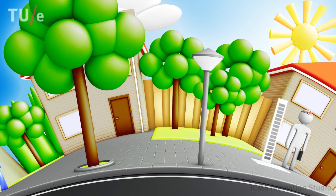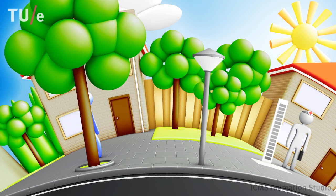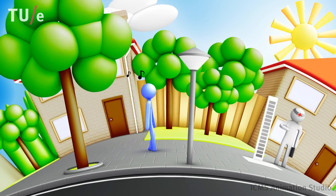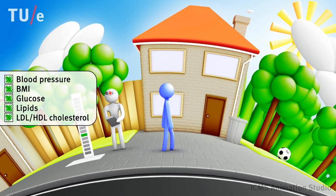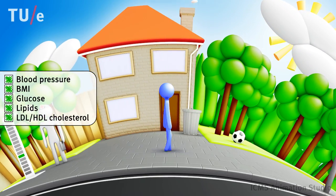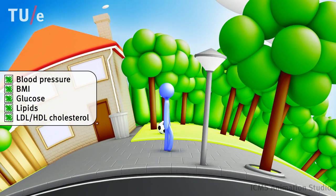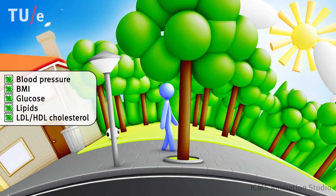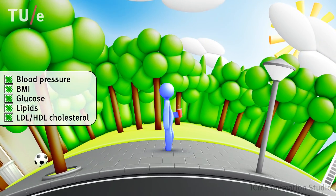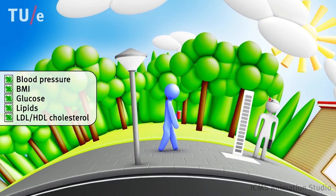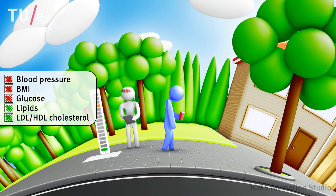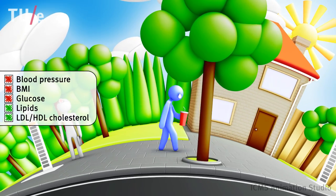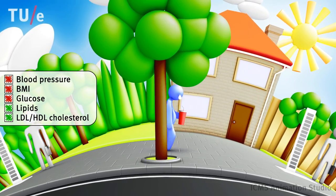Many diseases develop and progress slowly over time. For example, diabetes and cardiovascular diseases associated with obesity. Clinical measures such as blood pressure, body mass index, glucose, lipids and cholesterol levels provide information on disease risk and status but do not tell the complete story. Unraveling the underlying molecular changes is important to be able to diagnose, treat and prevent such diseases.